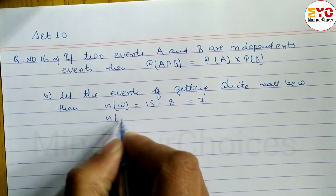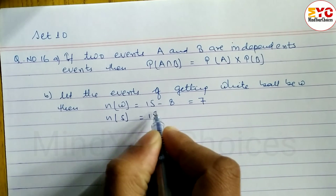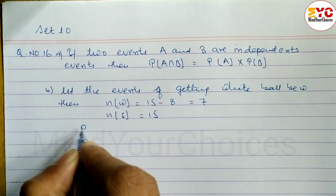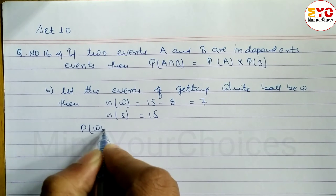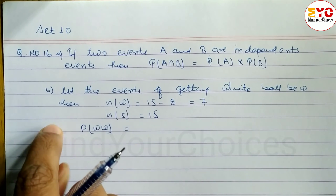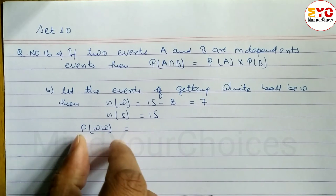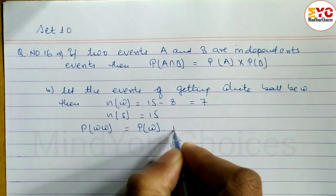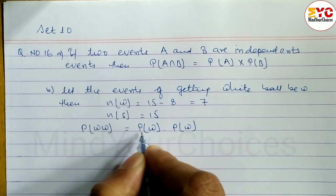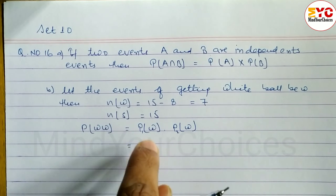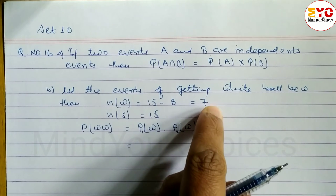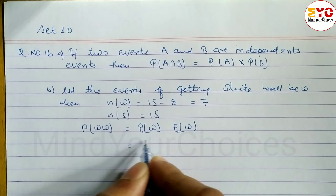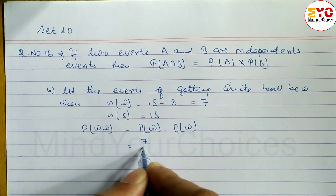Total number of balls Ns equals 15. We have to find out probability of getting both white balls, P(W). Probability of getting both white balls is given by the formula P(W) into P(W). What is the probability of getting the first white ball? Number of white balls by total number — the formula is NW by Ns — so directly 7 by 15.